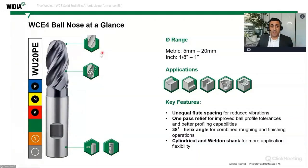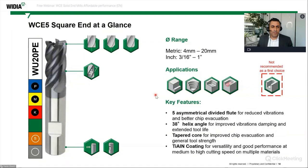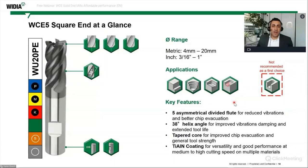For the four-flute ball nose, materials and coating are similar. The key application focus is 3D profiling. The range starts from 5 to 20 millimeters. For the five-flute, we have sharp, chamfered, and radius edge versions. An important note: slotting is not the first choice for the five-flute. If you need to do it, use a dynamic milling or trochoidal milling strategy. Full slotting with a five-flute is not recommended as the primary approach.